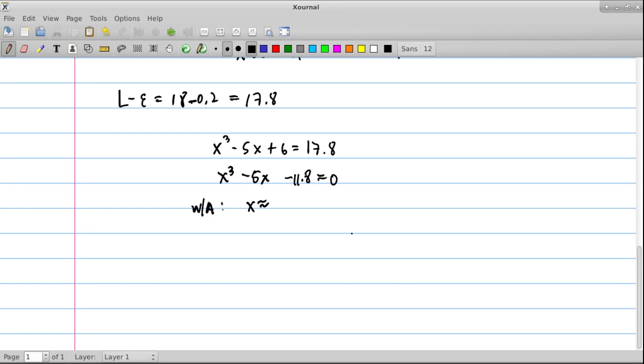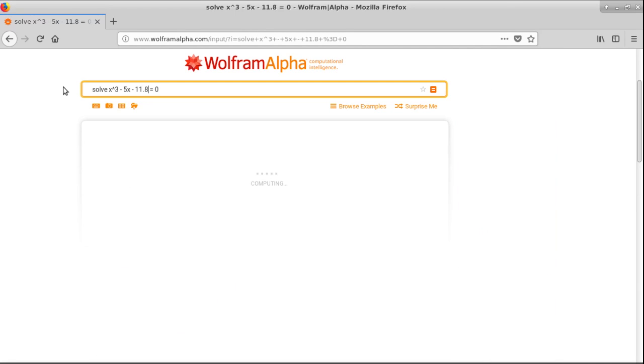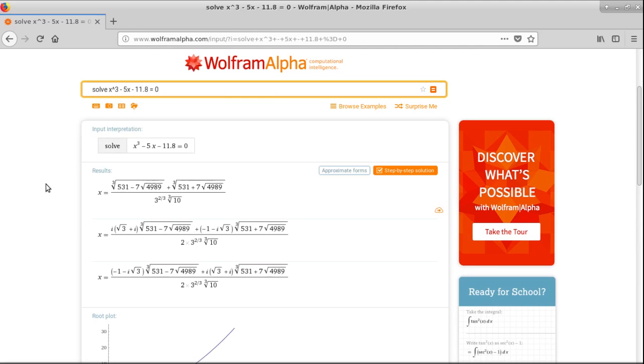Wolfram Alpha to approximate this for us. The only change we need to make is that this 12.2 should become an 11.8. And then we click it and we wait. Click enter and wait. And this time we got 2.99.